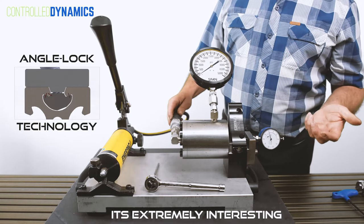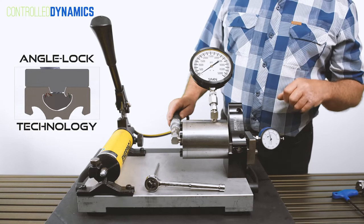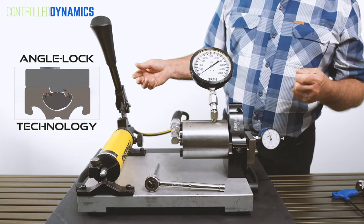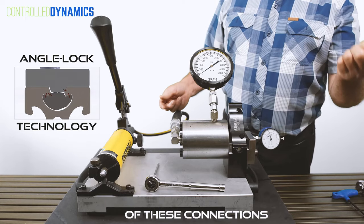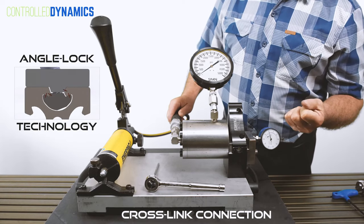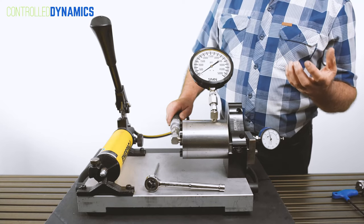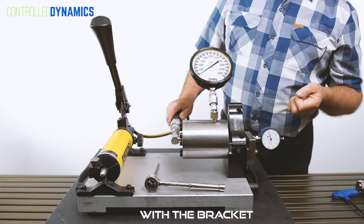It's extremely interesting. If you have an assembly, what happens is you have a matrix of these connections, which we call a cross link connection. The actual bracket or nut is cross linked with the bracket.